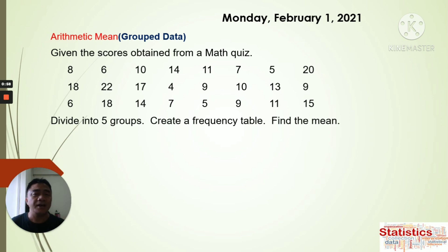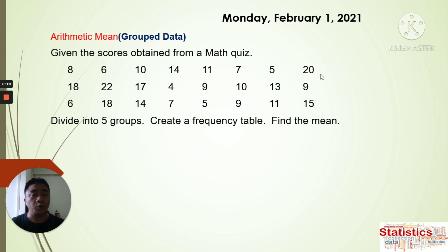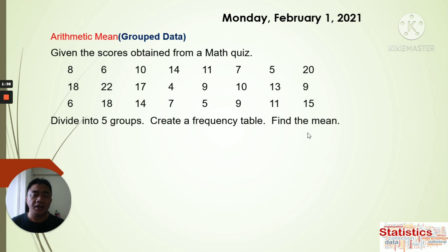We have the following given: the scores obtained from a math quiz. There are 24 data values collected. For this one, we're going to divide this into five groups and create a frequency table, and lastly find the arithmetic mean.